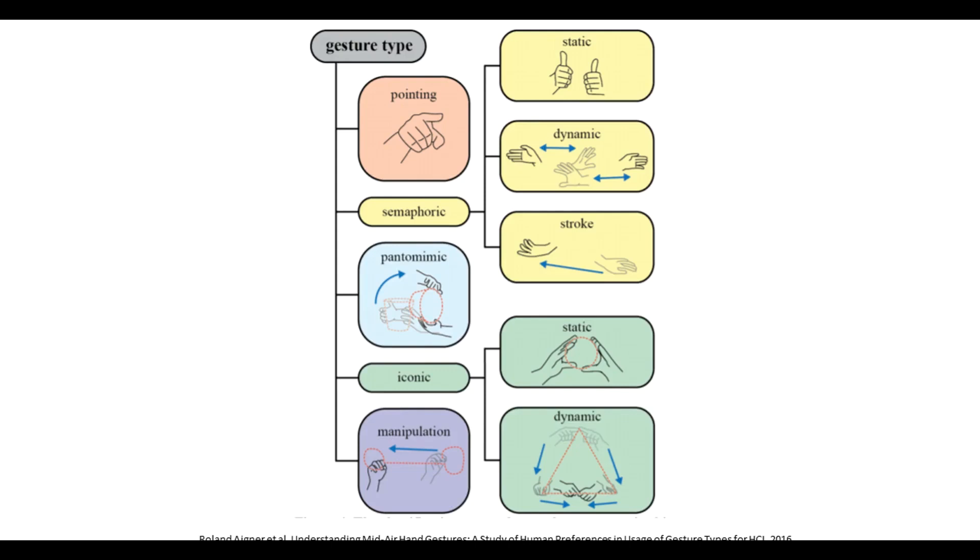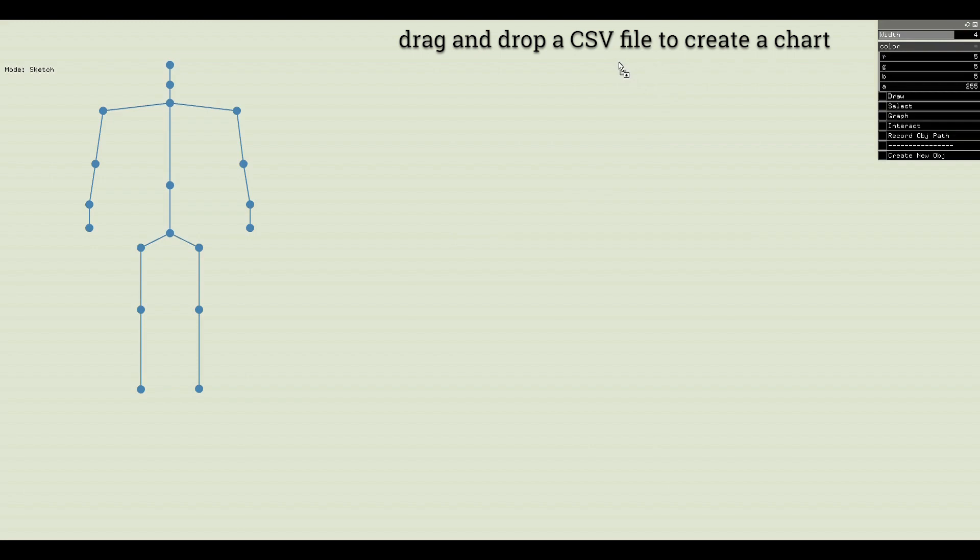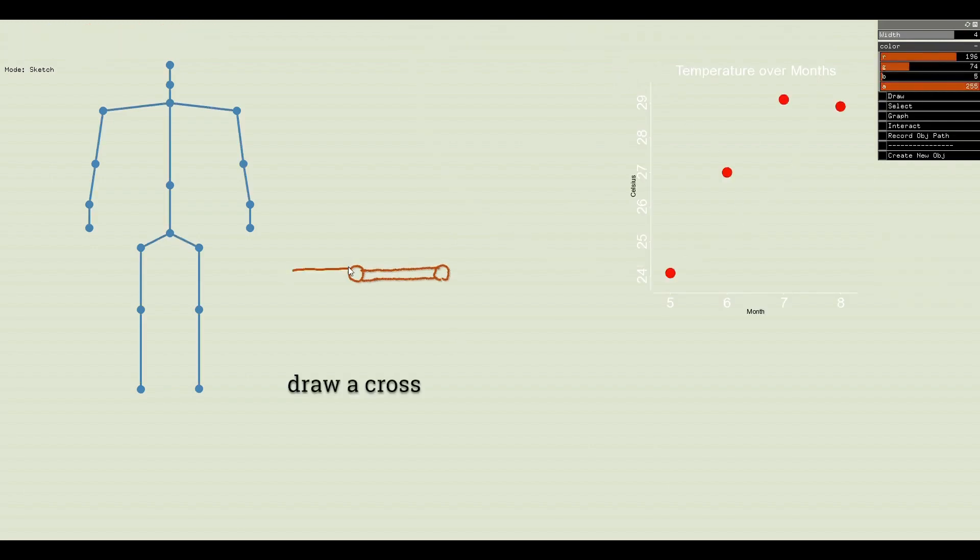Existing gesture taxonomies demonstrate the richness of human hand gestures to communicate with computers. Let's use a pantomimic gesture to interact with a cross that will drive a data chart timeline.